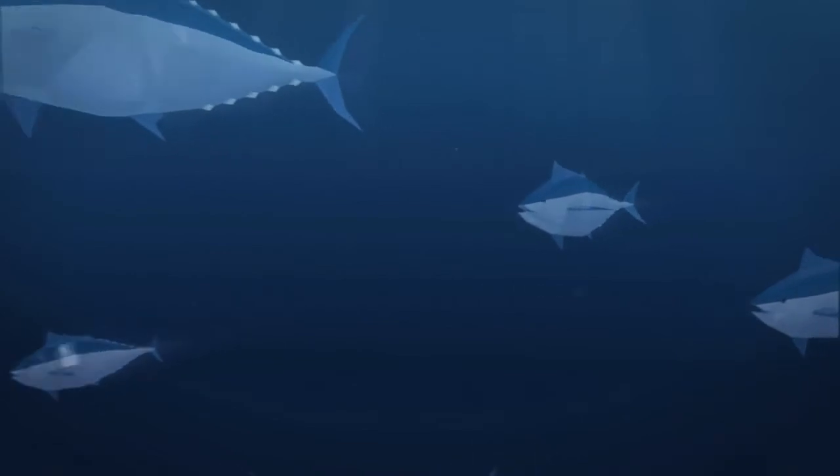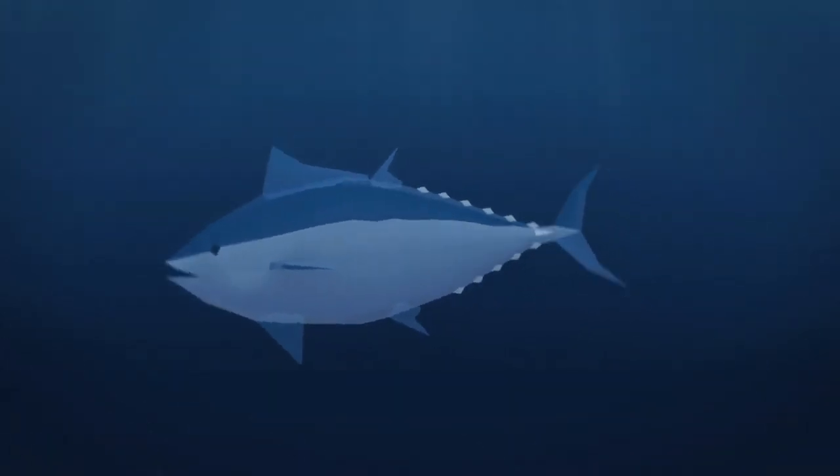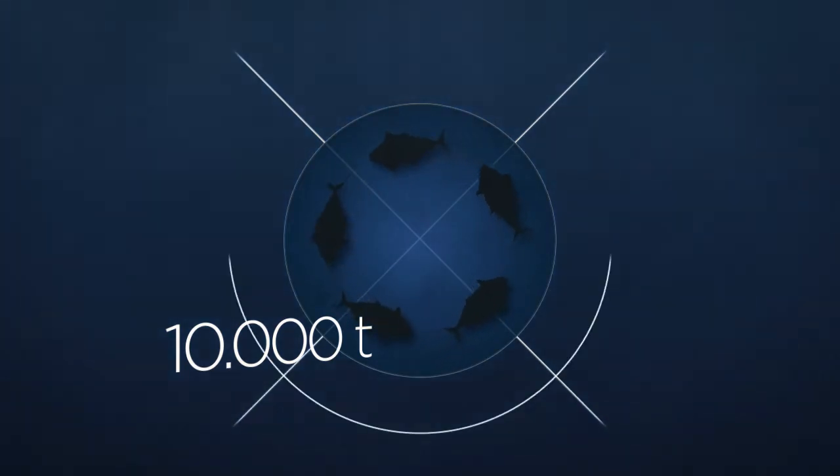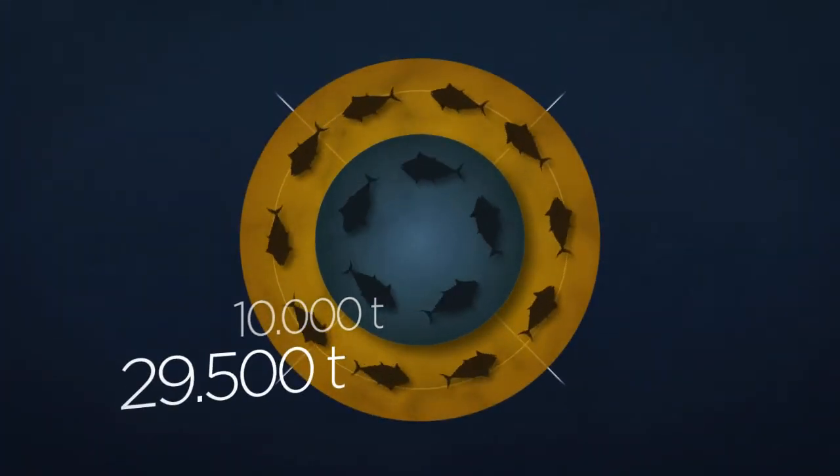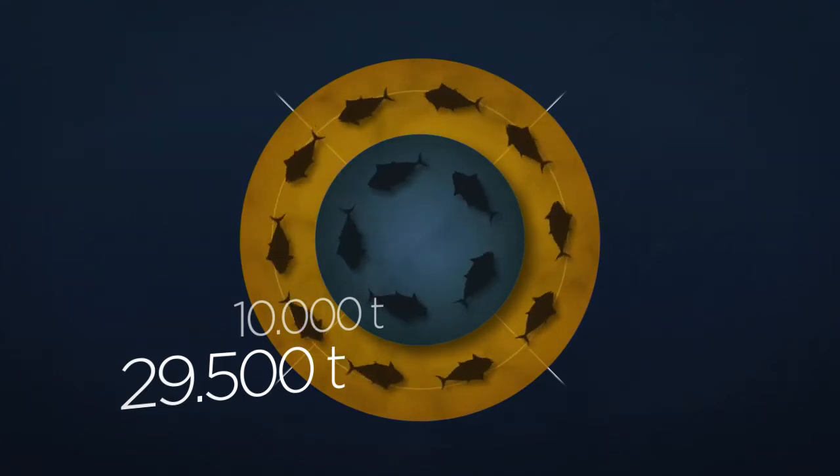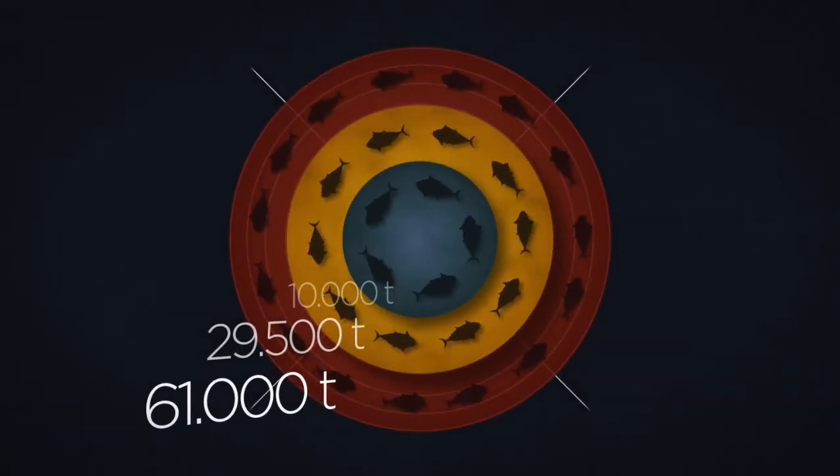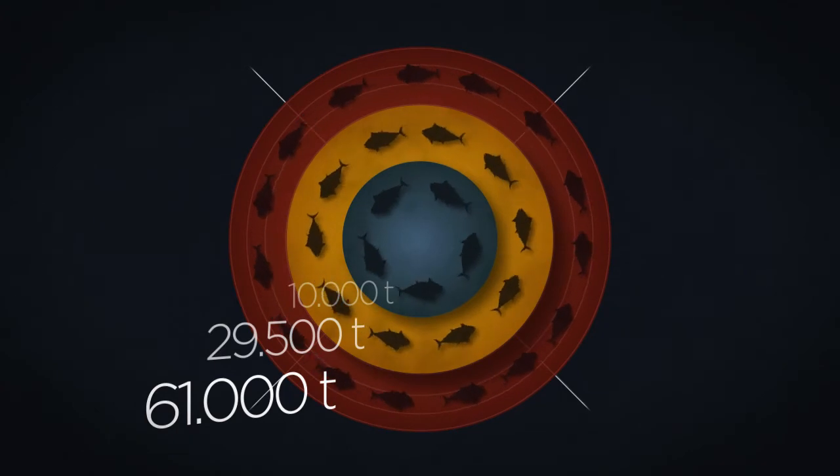In 2008, fishing limits were defined for the highly prized bluefin tuna. Scientists recommended a fishing limit of 10,000 tons to rebuild the increasingly depleted population. However, the EU and other fishing nations decided on a fishing limit of 29,500 tons—three times what scientists had suggested. Then, despite this already inflated limit, 61,000 tons of bluefin tuna were caught. That is six times more than the recommended limit.